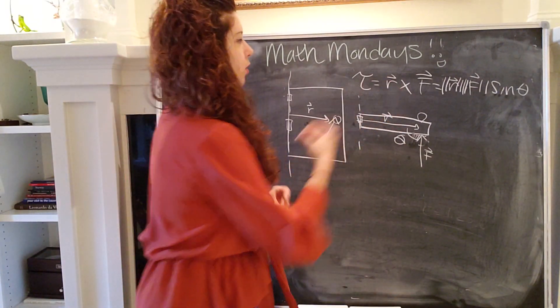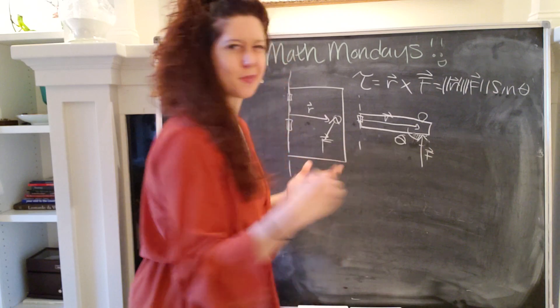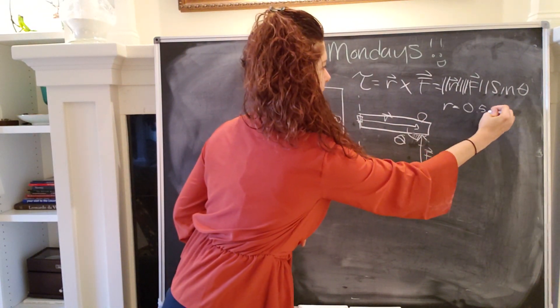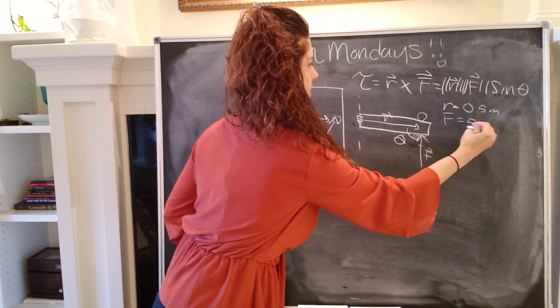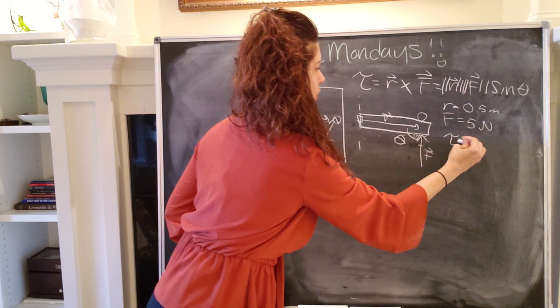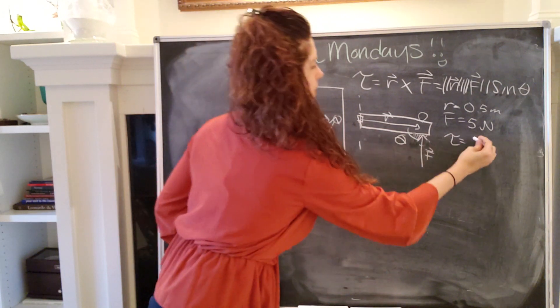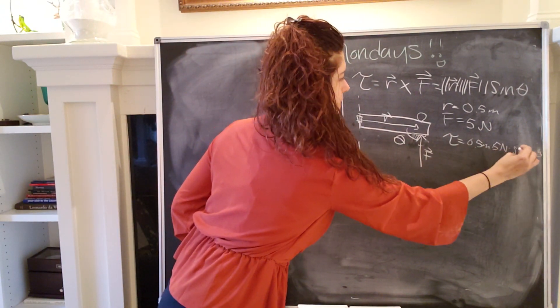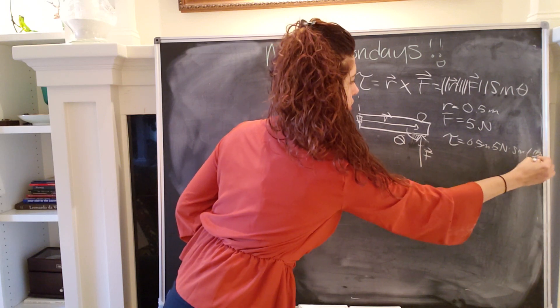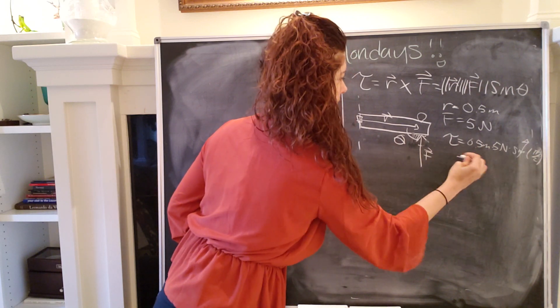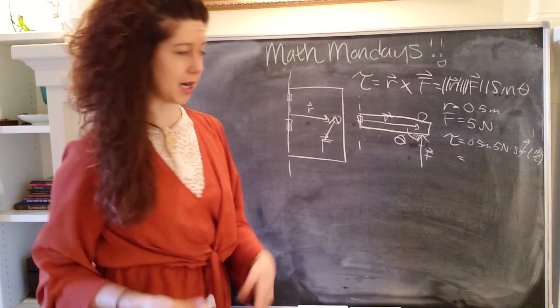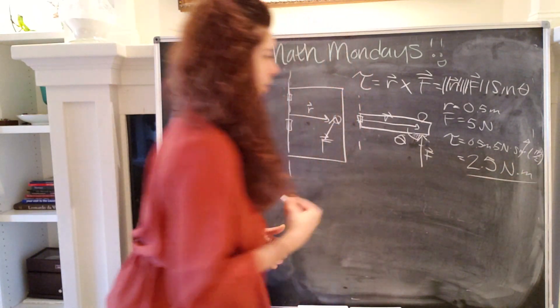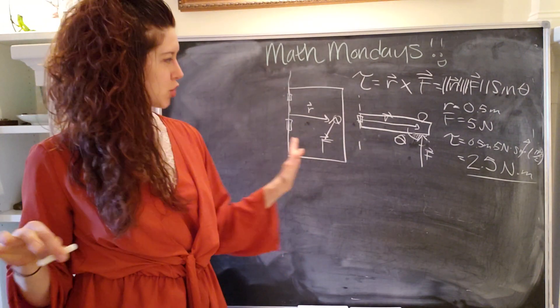So if we were to say, let's put some numbers on this. If we were to say that our lever arm was 0.5 meters, or half a meter, and our force was 5 newtons, then the torque would be 0.5 meters times 5 newtons times sine of π over 2. That goes to 1. So it's just one half times 5, which is going to be 2.5 newton meters. Boom. Cool, right? Pretty straightforward.